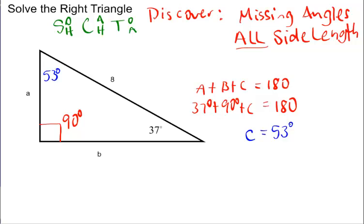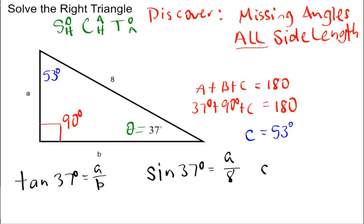Now, the other thing that we want to do is determine our missing side lengths. So, let's let 37 be our theta. So, we are missing the adjacent side and the opposite side. So, if I say the tangent of 37 degrees is opposite over adjacent, I can't do anything with that right now. I don't know A or B. But, I do know that I can do the sine of 37 degrees because that is the opposite over the hypotenuse. And, I know I can do the cosine of 37 degrees because that is going to be the adjacent over the hypotenuse.